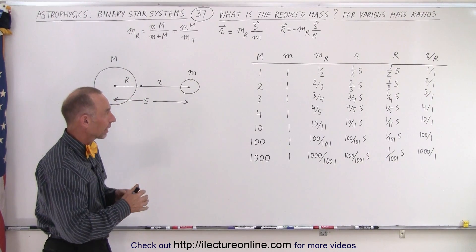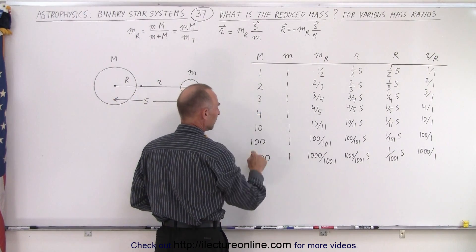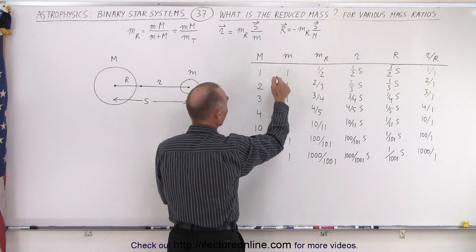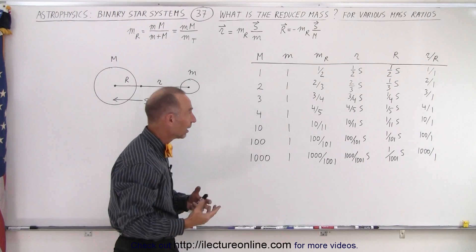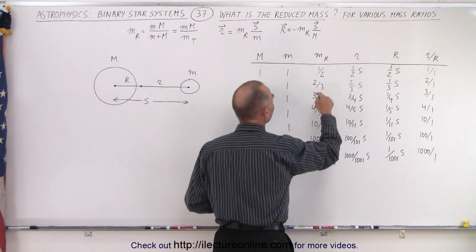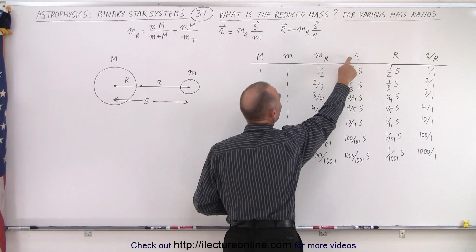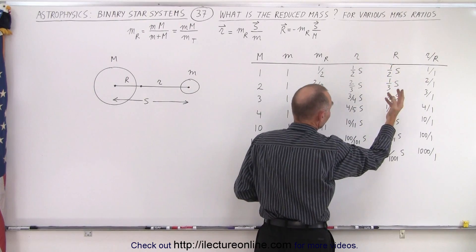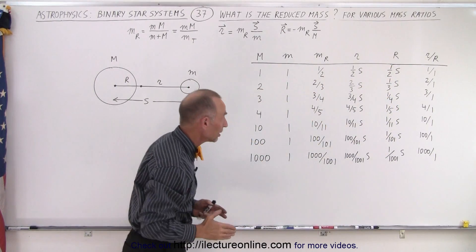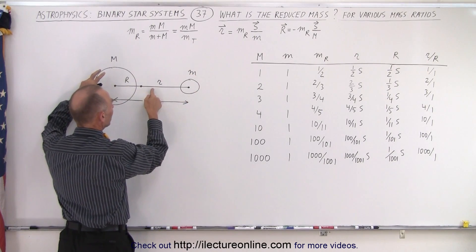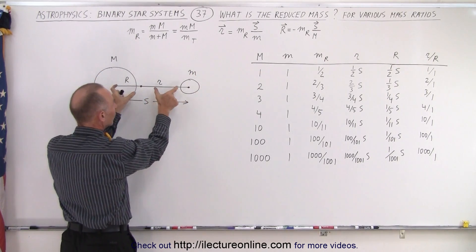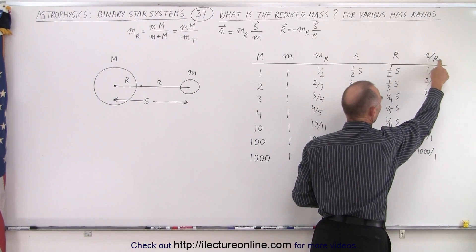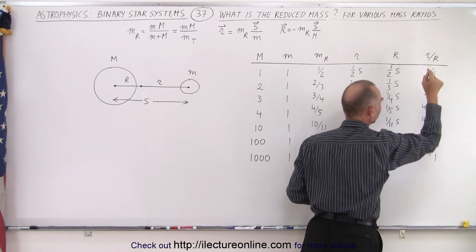Here's a table that gets us all the way from a one-to-one relationship down to a one-thousand-to-one relationship. In the first case, the large mass and the small mass are essentially the same — there's no large and small mass. They're equal in size, and so the reduced mass is now one-half. The radius of the orbit of the small mass, which would also be the radius of the orbit of the large mass since they're the same size, is one-half the total distance between them, and that makes perfect sense. If they're the same size, the barycenter will be right in the middle, and the radii will be the same for both orbits. Notice that the ratio of the radius of the small object to the radius of the large object is one-to-one.